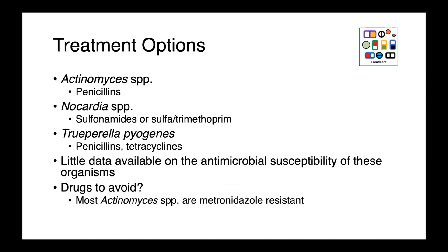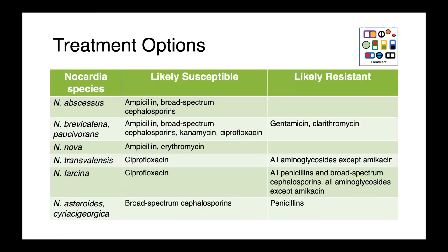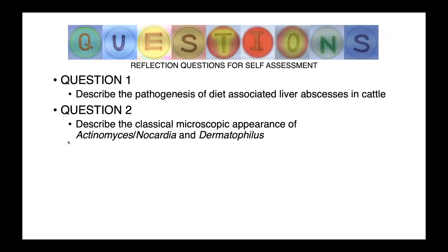Treatment options really depend on which organism we're dealing with. For Actinomyces species, penicillin is the treatment of choice. For Nocardia, we generally rely on the sulfonamides. Trueperella pyogenes is readily treated with either the penicillins or tetracyclines. Unfortunately, for all of these organisms we have relatively little data on antimicrobial susceptibility, so we're often left to treat empirically without laboratory guidance. Most Actinomyces species are intrinsically metronidazole resistant. There is a table reproduced from a human clinical microbiology textbook showing which drugs various Nocardia species are likely to be susceptible or resistant to — not a hard and fast rule, but good first treatments to consider.